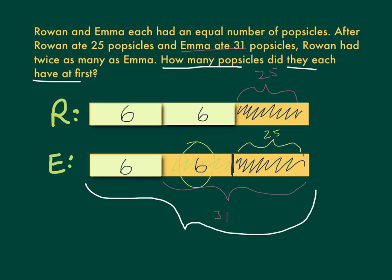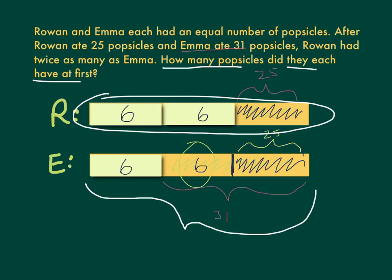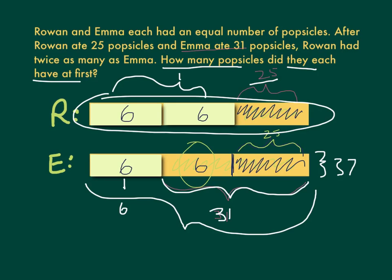What is Rowan's total? I'll check both to see if they match. For Emma: 31 plus 6 is 37. Now double-checking with Rowan: she had 25, and these two blocks together are 12, so 25 plus 12 is also 37. At the beginning, they each had the same amount — 37. And when they finished, Rowan had twice as many as Emma, so all of our numbers add up.